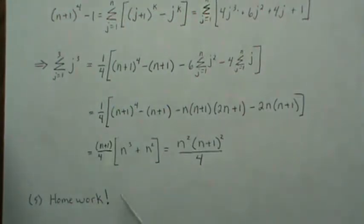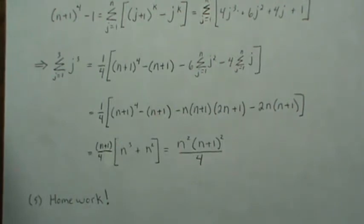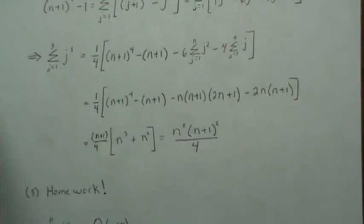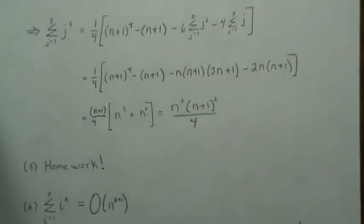The sum of the first n integers raised to the fifth power will be homework. The approach is the same: let k equal 5, use the identity we derived, take everything to the other side but what you want to solve for, reduce, and it all drops out and works out nicely.